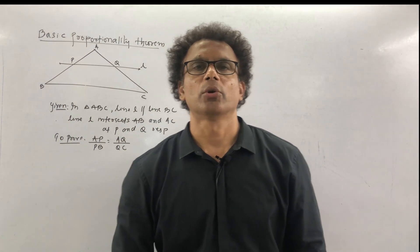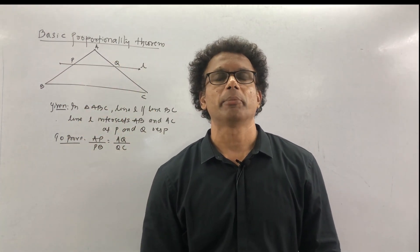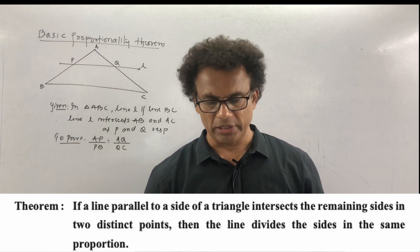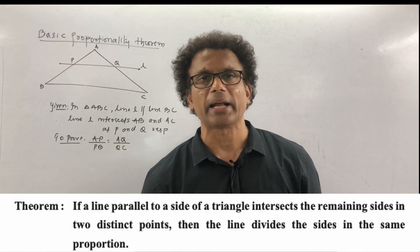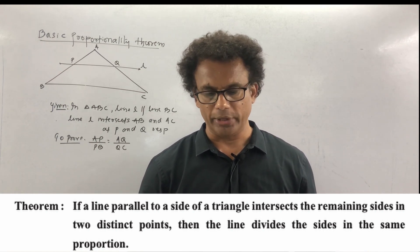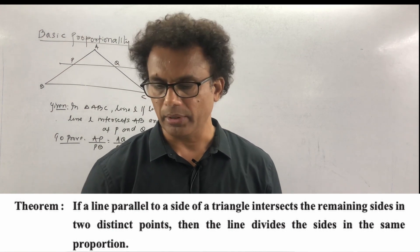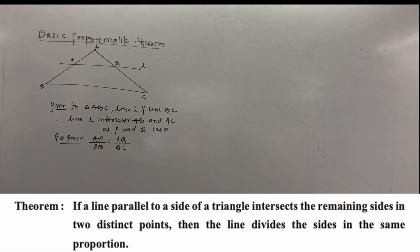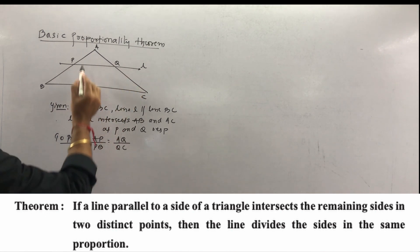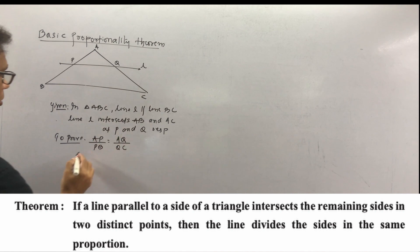Now we will prove the basic proportionality theorem. You have to write the statement: if a line parallel to a side of a triangle intersects the remaining sides in two distinct points, then the line divides the sides in the same ratio. That means if this line PQ is parallel, we get AP upon PB is equal to AQ upon QC.